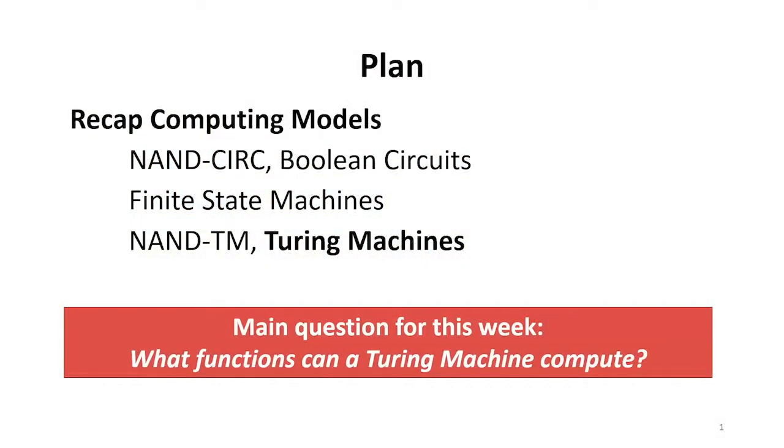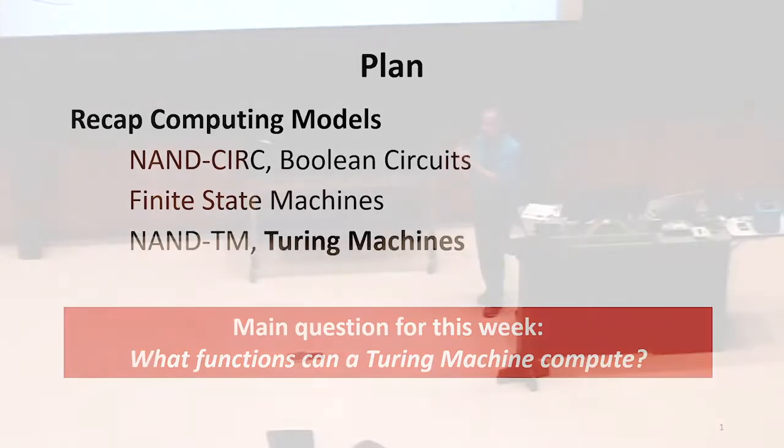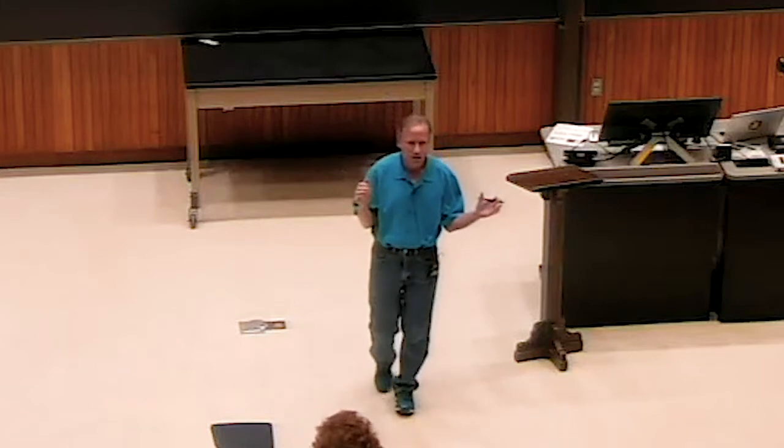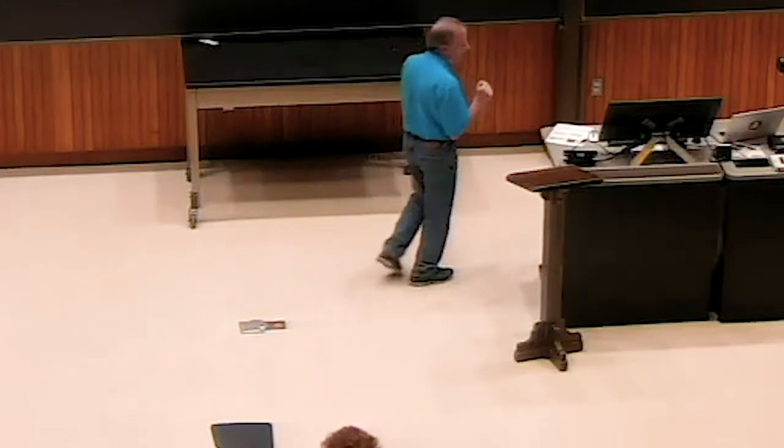The big question we are answering this week is understanding what functions can and more interestingly cannot be computed by this Turing machine model, which seems like a powerful model of computing. We'll see that it's as powerful as necessary to capture some large intuitive sense of what machines can compute. That's where we're going over the next two classes.